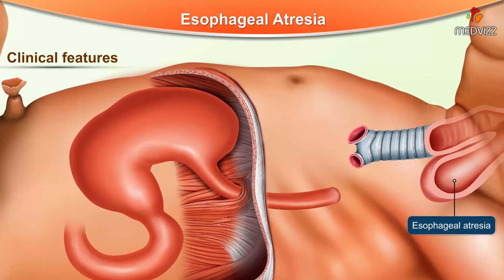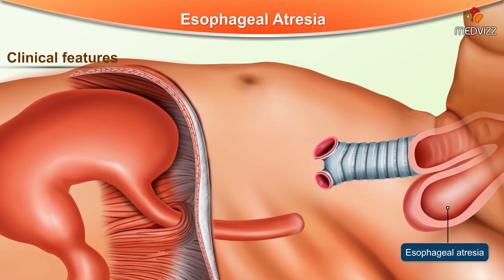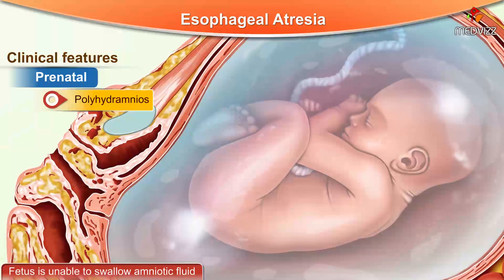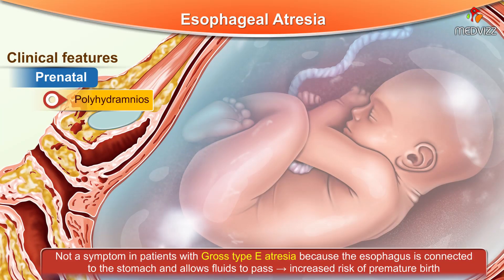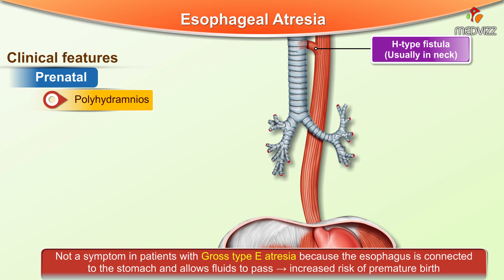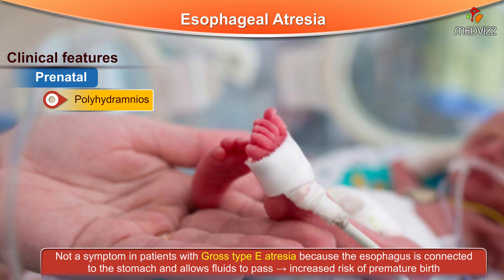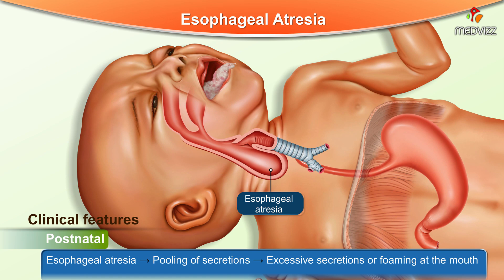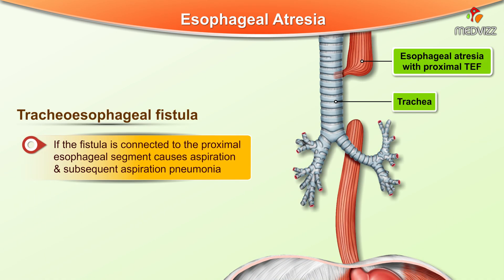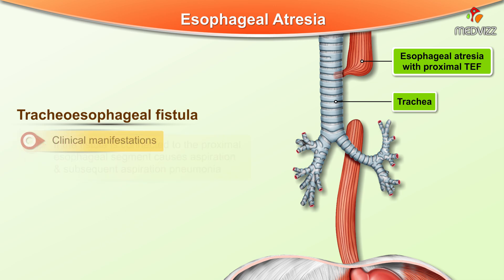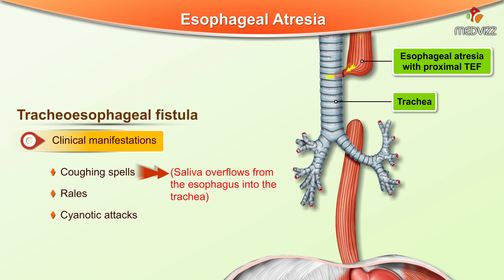Clinically, polyhydramnios — due to the fetus being unable to swallow amniotic fluid — is a common prenatal feature. However, polyhydramnios is not present in gross type E atresia because the esophagus is connected to the stomach, allowing fluids to pass, but resulting in an increased risk of premature birth. Postnatally, esophageal atresia causes pooling of secretions and foaming at the mouth. If the fistula is connected to the proximal segment, aspiration can occur, leading to aspiration pneumonia with coughing spells, rales, and cyanotic attacks.